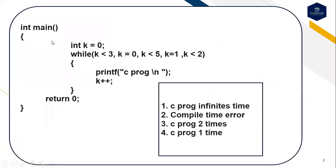This is the first question. In main, int k is equal to 0. The for loop has multiple comma-separated expressions: k less than or equal to 3, comma k equal to 0, comma k less than 5, comma k assigned 1, comma k less than 2. Inside the loop, I'm trying to print 'C program' and k gets incremented by one. Predict the output: first option is C program prints infinite times, second is compile time error, third is C program prints two times, fourth is C program prints one time.